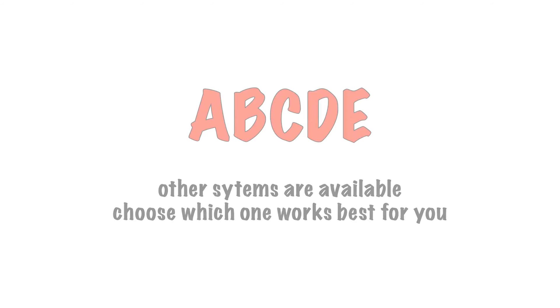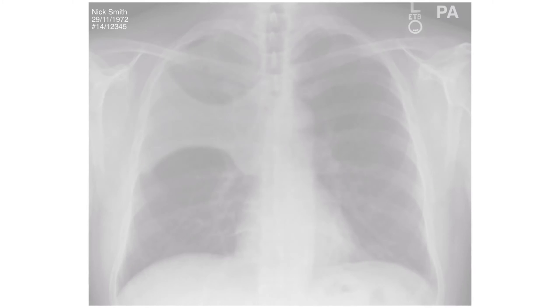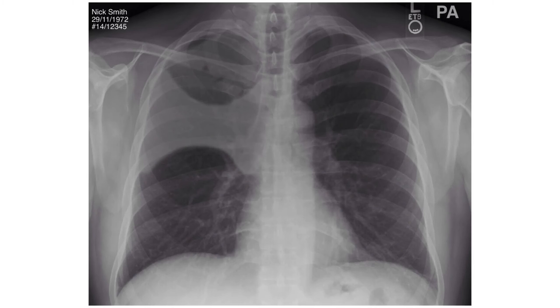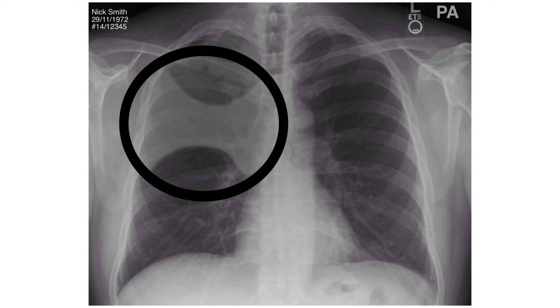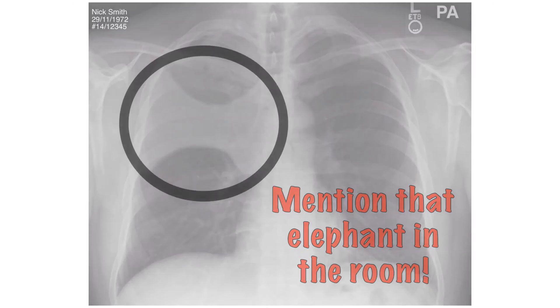We'll be using the ABCDE approach to chest x-ray interpretation. If there is a clear area of abnormality, don't hesitate to highlight it first. But remember to go through systematically afterwards to check you haven't missed anything.